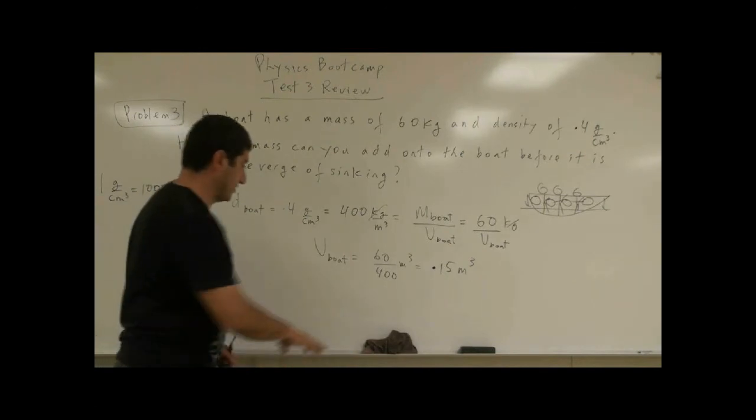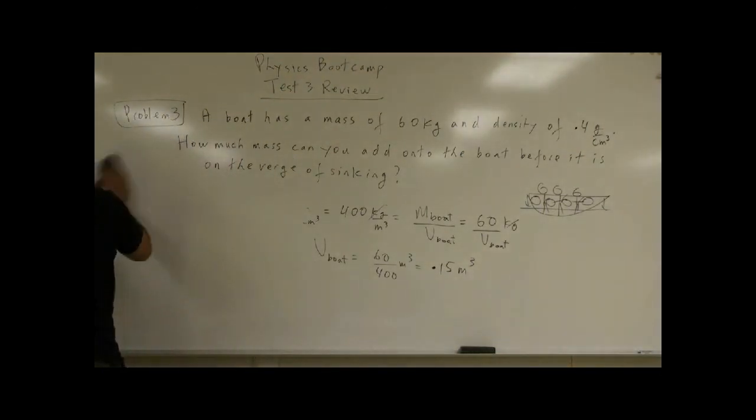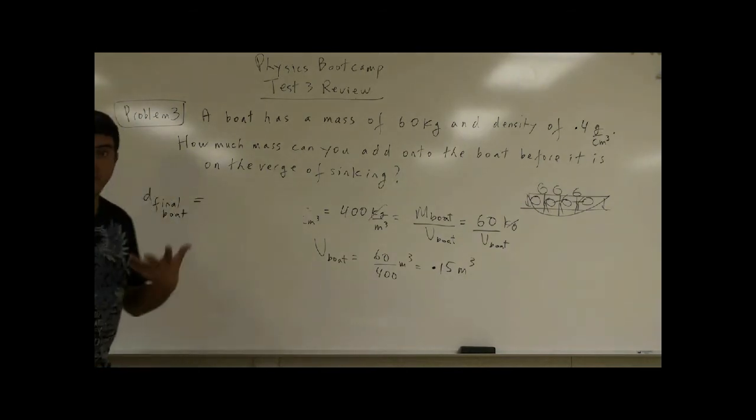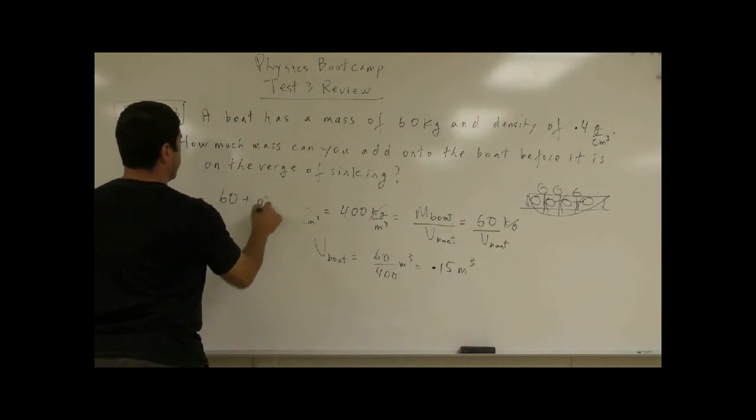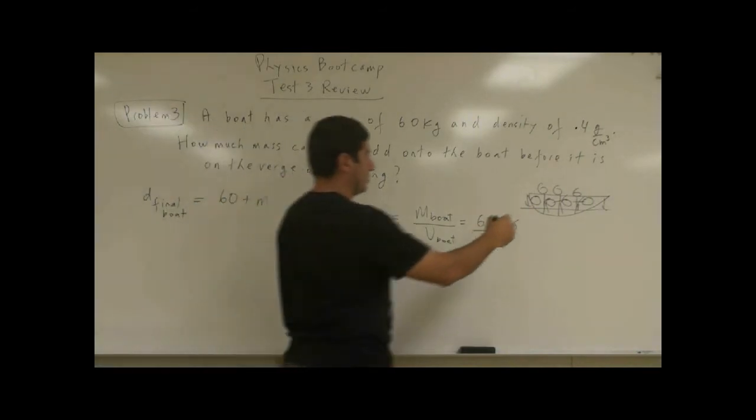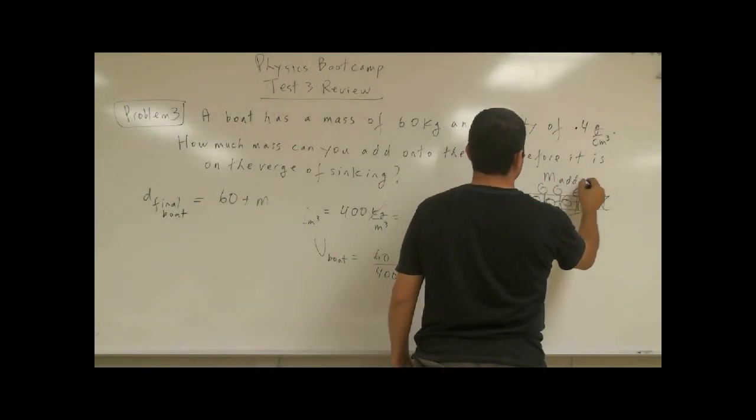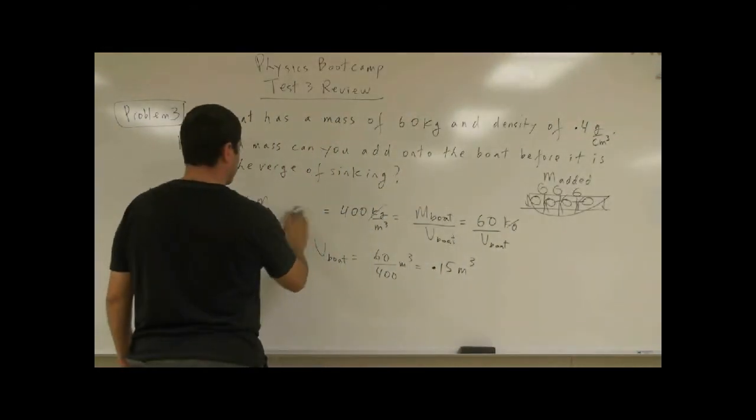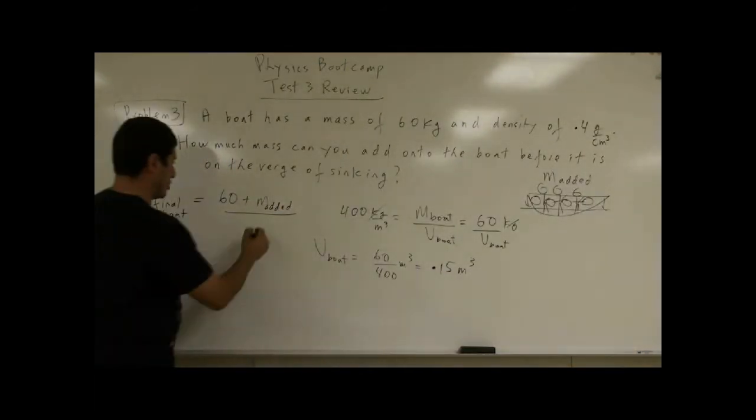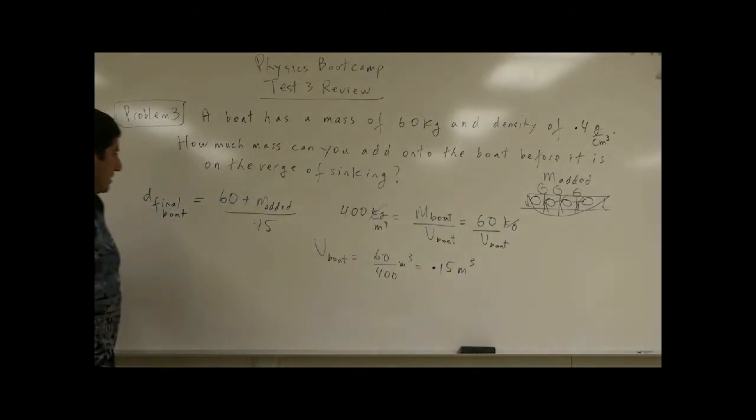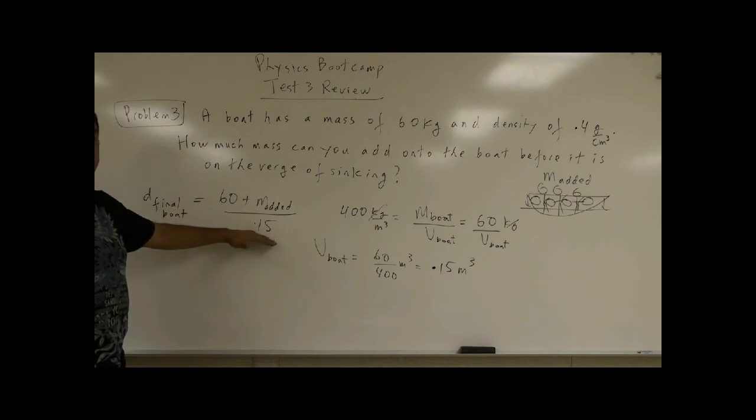So the new density of the boat is going to equal what? The final density of the boat is equal to its final mass, which is equal to 60 plus how much mass you can add on top. Let's say all the mass that you added, M added. So let's call that M added, divided by the volume of the boat, which is 0.15. So if you add 60 plus whatever mass you add, you keep the volume the same.